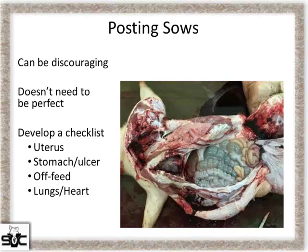In general, posting sows can be pretty discouraging. They're sometimes hard to post, and a lot of times we open up those sows and there's really nothing visual that says why she died. It's frustrating, but if we get enough sows opened up we can make some conclusions on these unknown causes of death. For those who post sows routinely, develop a quick checklist — run through body systems, make note of any abnormalities. If it's truly unknown after those checks, it's a true unknown.